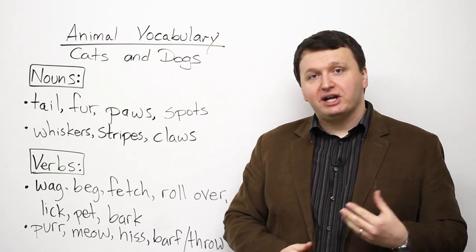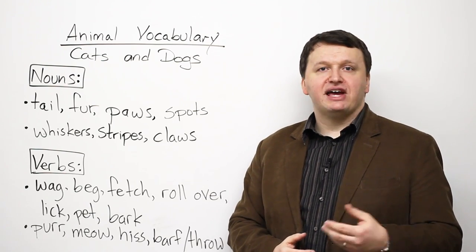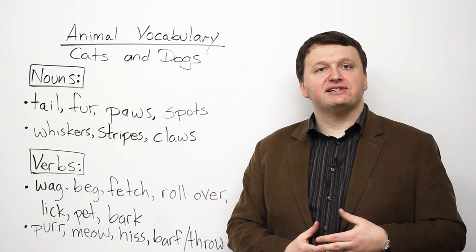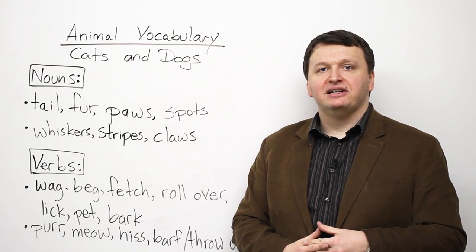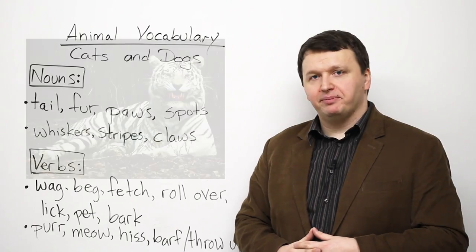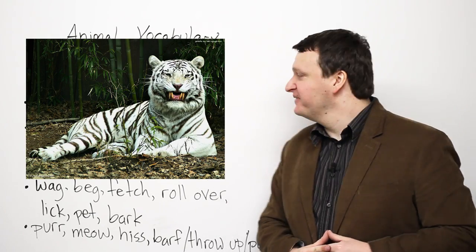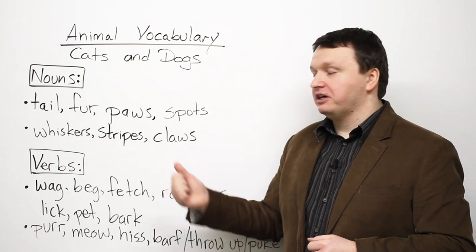Next, we have stripes. Tigers have stripes. Some cats have stripes as well. They're lines on the body, as you can see here.